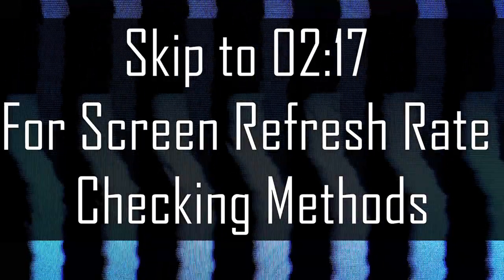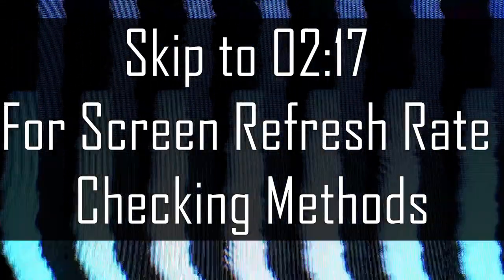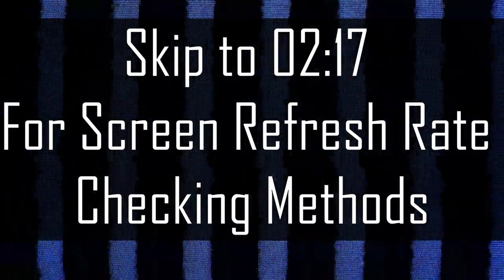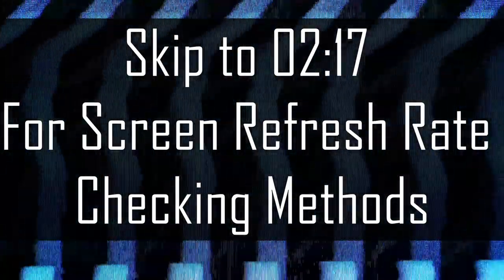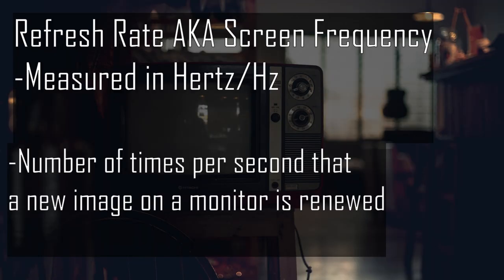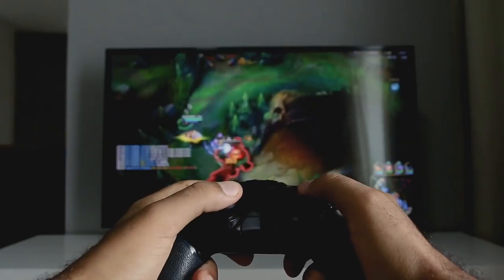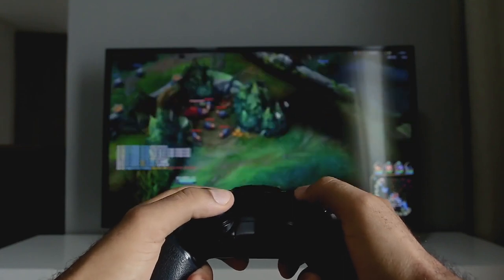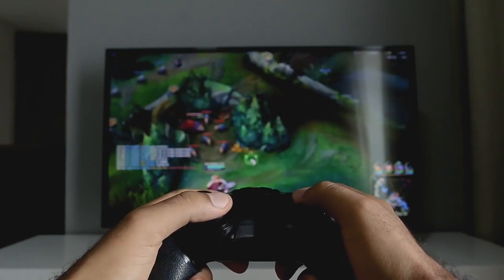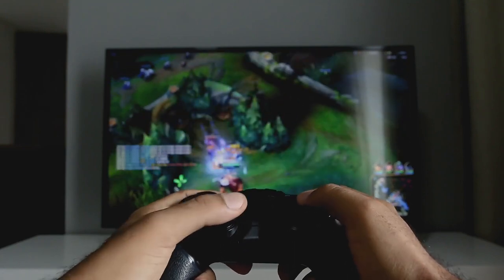Skip to the time on screen to check the screen refresh rate methods. First, let me explain what refresh rate is. Refresh rate, measured in Hertz, is the number of times per second that a new image on your monitor or TV will be renewed. The higher the number, the better the TV will display fast-moving objects. This is a big advantage for gamers who play fast-paced games like first-person shooters such as Call of Duty.